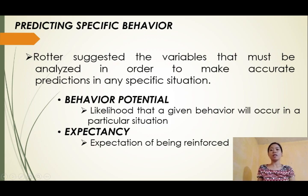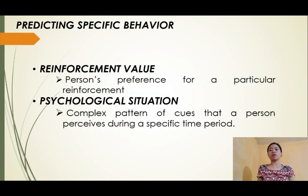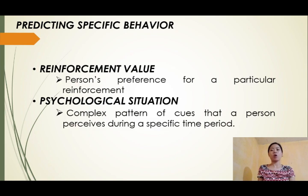Expectancies can be either general or specific, and the overall likelihood of success is a function of both generalized and specific expectancies. The third variable is Reinforcement Value — a person's preference for any particular reinforcement over others if they are equally likely to occur. Internal reinforcement value is the individual's perception of an event, whereas external reinforcement refers to society's evaluation of an event. Reinforcement sequences suggest that the value of an event is a function of one's expectation that a particular reinforcement will lead to future reinforcements.